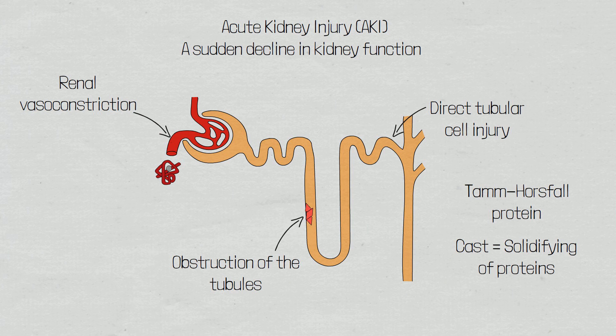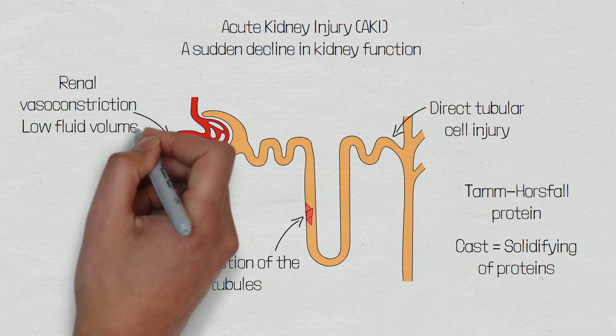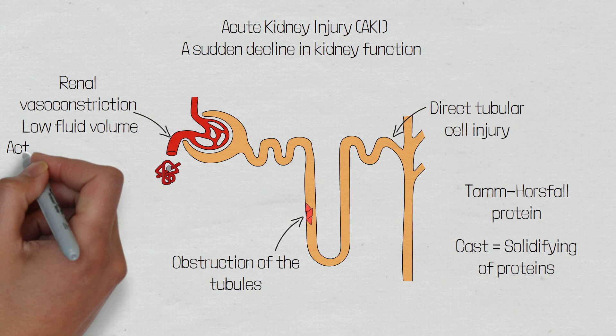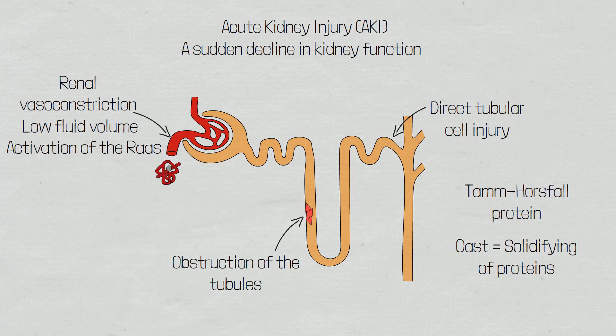Renal vasoconstriction is caused by reduced renal blood flow due to the loss of extracellular fluid that has entered the damaged muscle cells. This is further enhanced by secondary activation of the renin-angiotensin-aldosterone system, which is activated by low circulating fluid, low sodium, and high potassium levels — all clinical manifestations of rhabdomyolysis. It is important to remember that acute kidney injury will further worsen any electrolyte abnormalities and hypotension that has occurred.